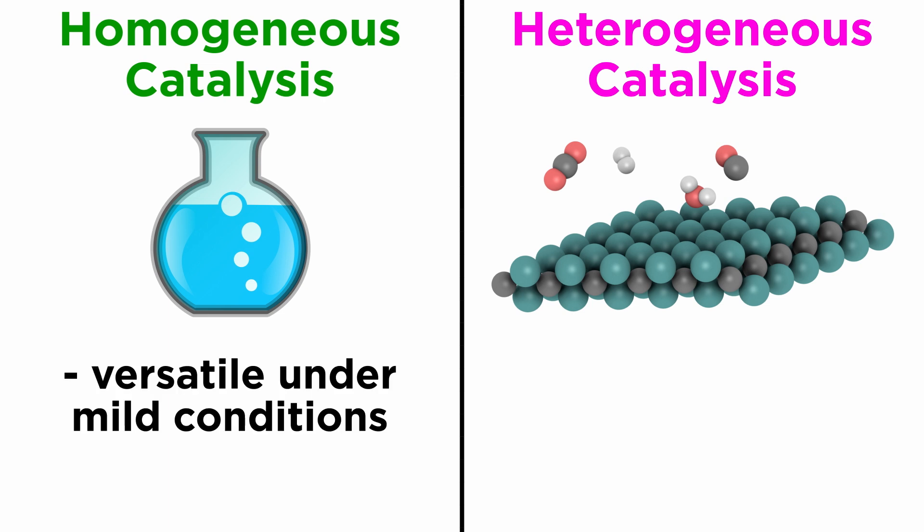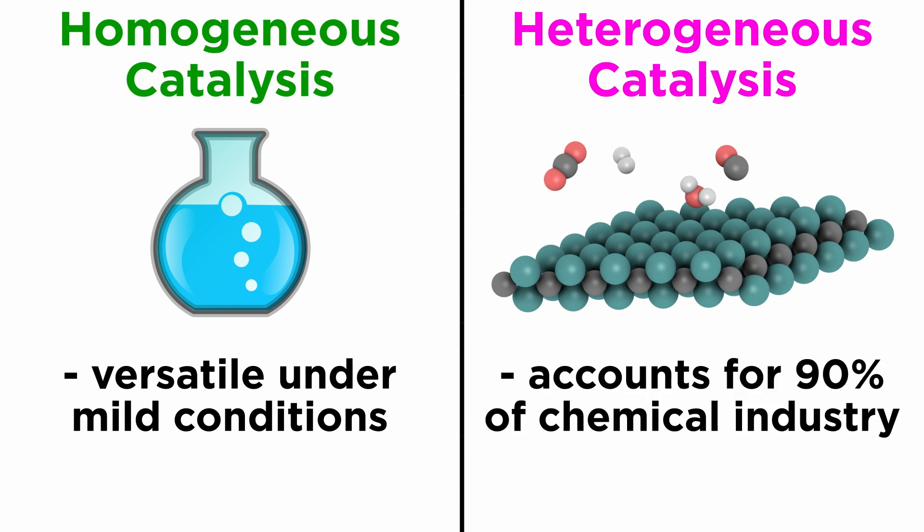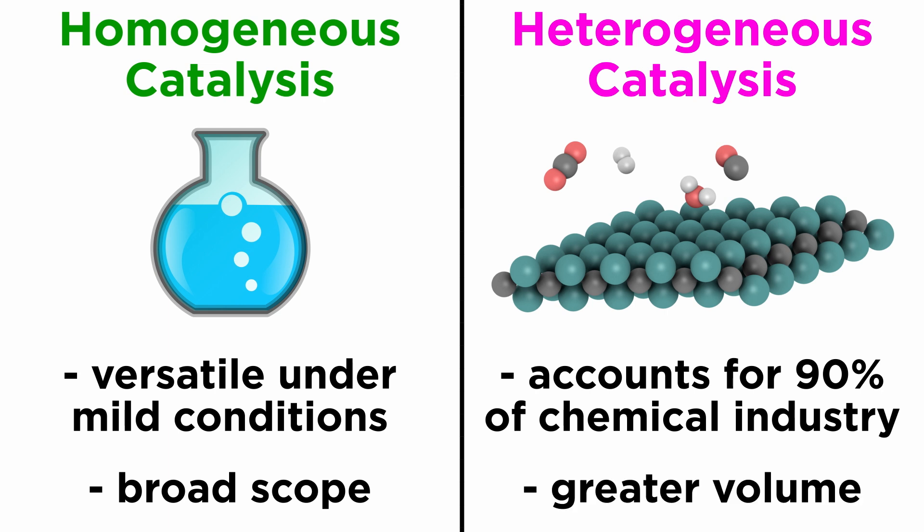To conclude, whereas homogeneous catalysis is much more powerful in terms of the variety of operations it can perform under mild conditions, up to 90% of the products of the chemical industry involve heterogeneous catalysis. So we can safely say that homogeneous catalysis has a much broader scope, whereas heterogeneous catalysis accounts for much larger product volumes. We will see examples of the most important industrial reactions as we continue through the series.